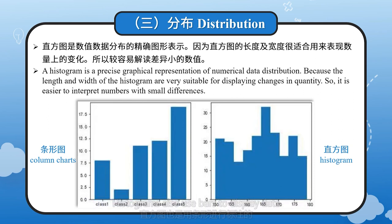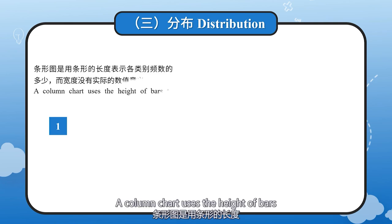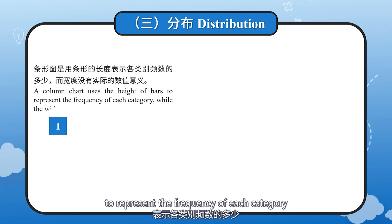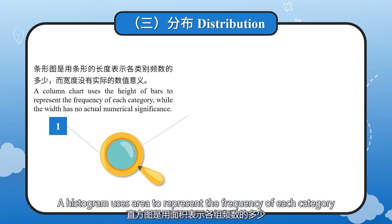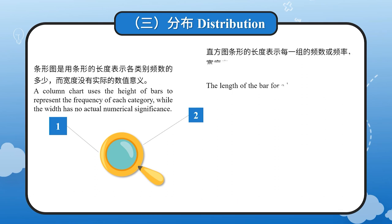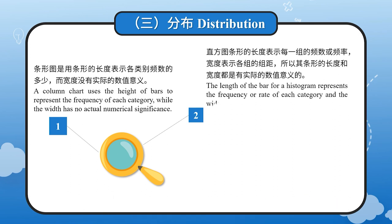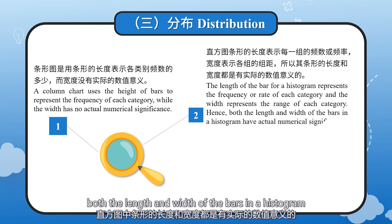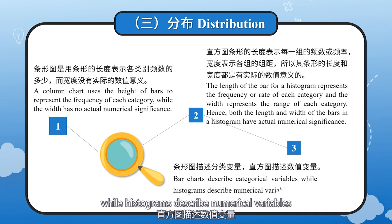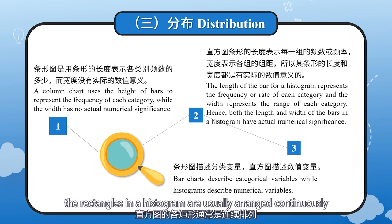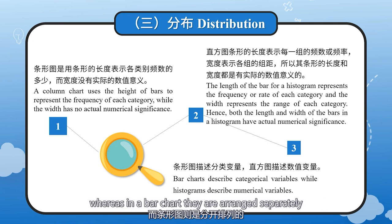Histograms also use bars to display data, but many people can't distinguish between column charts and histograms. A column chart uses the height of bars to represent the frequency of each category, while the width representing the category is fixed and has no extra numerical significance. A histogram uses area to represent the frequency of each category; the length of the bar represents the frequency or rate, and the width represents the range of each category. Hence, both the length and width of bars in a histogram carry numerical significance. Column charts describe categorical variables, while histograms describe numerical variables. Since grouped data are continuous, the rectangles in a histogram are usually arranged continuously, whereas in a column chart they are arranged separately.